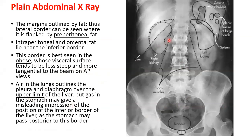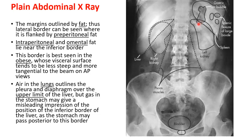On plain abdominal X-ray, the liver margins are outlined by fat. The lateral border can be seen, flanked by preperitoneal and omental fat near the inferior border. This border is best seen in obese patients. Air in the lung outlines the pleura and diaphragm over the upper limit of the liver, but gas in the stomach may give a misleading impression of the position of the inferior border of the liver.